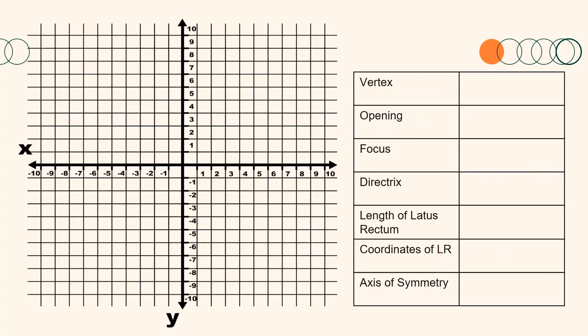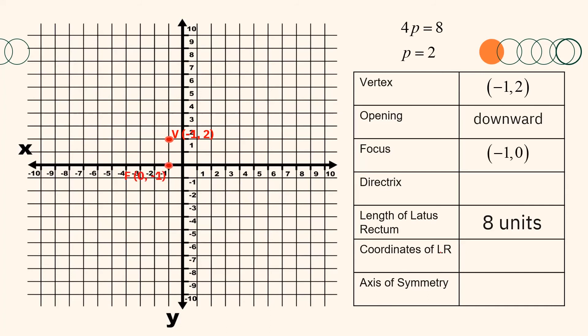The vertex is at (negative 1, 2), the parabola opens downward, the length of the latus rectum is 8 units, and p is equal to 2. Using p and the downward opening, the focus is 2 units below the vertex — the point (negative 1, 0). The directrix is 2 units from the vertex on its exterior — the line y equals 4. Since the latus rectum is 8 units, its endpoints are 4 units to the left and to the right of the focus: the points (negative 5, 0) and (3, 0).